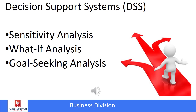We also have what-if analysis, where the model builder makes predictions and assumptions regarding the input data. The accuracy of the results is highly subjective because the inputs are often uncertain. Then there is goal-seeking analysis — that's when you work backwards: you have the value or goal you're looking for, and then try to figure out what inputs you need to achieve that goal or output.